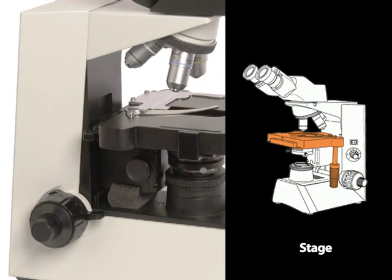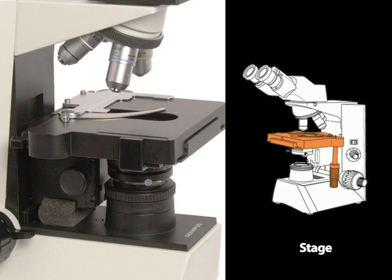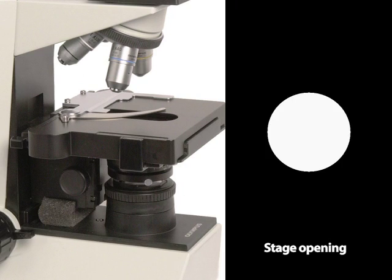Although the stage of a stereomicroscope is usually completely solid, the stage of a compound microscope has an opening, a hole, for light to pass through.